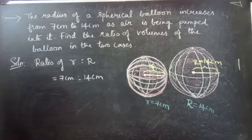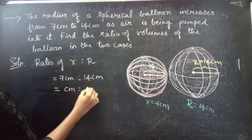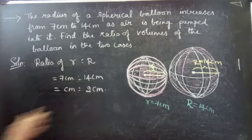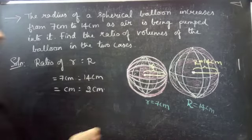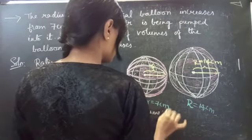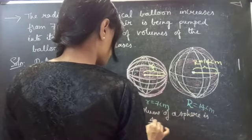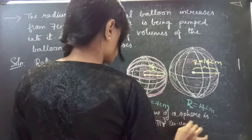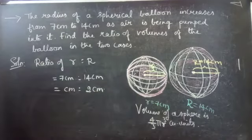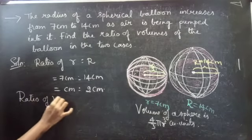We can write 7 cm is to 14 cm, which reduces to 1 is to 2 — since 7 ones are 7 and 7 twos are 14. Now coming to volume, since we know that the volume of a sphere is 4/3 π r³ cubic units. So now we are going to find the ratio of volumes.